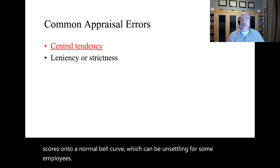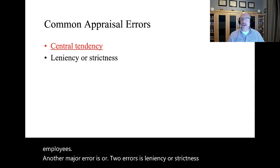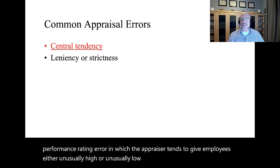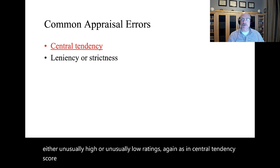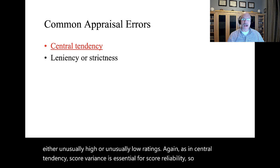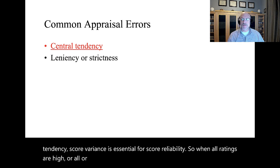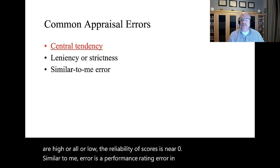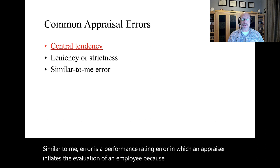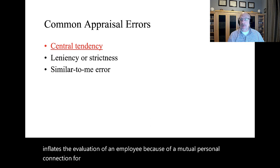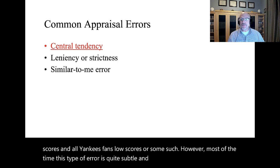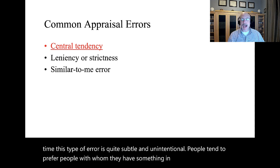Another major error is leniency or strictness — a performance rating error in which the appraiser tends to give employees either unusually high or unusually low ratings. As with central tendency, score variance is essential for score reliability, so when all ratings are high or all are low, the reliability of scores is near zero. Similar-to-me error is a performance rating error in which an appraiser inflates the evaluation of an employee because of a mutual personal connection. Most of the time, this type of error is quite subtle and unintentional — people tend to prefer people with whom they have something in common.